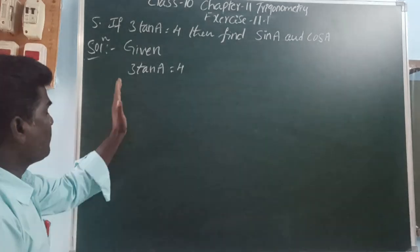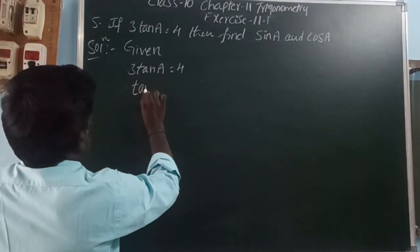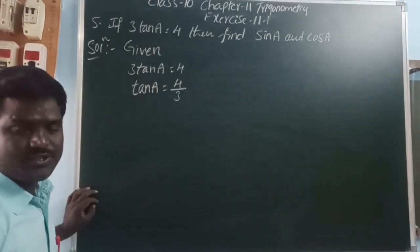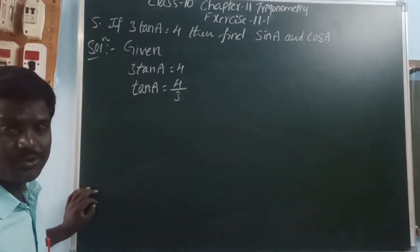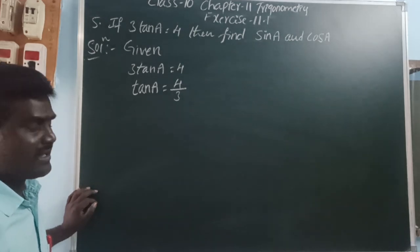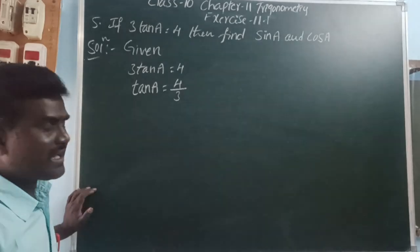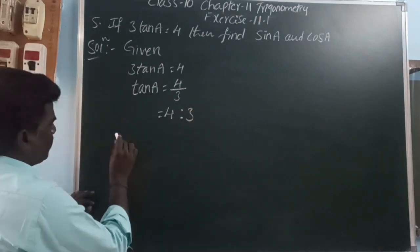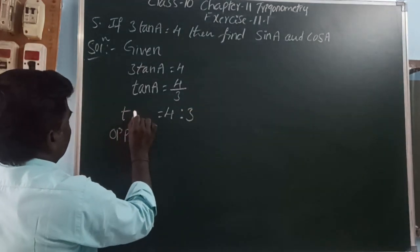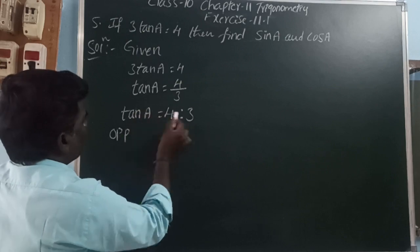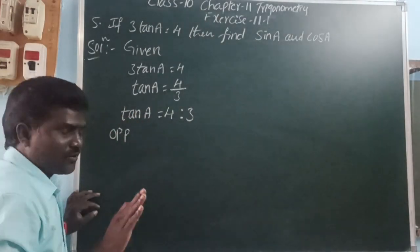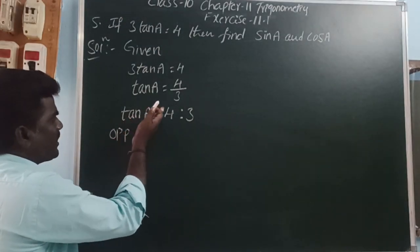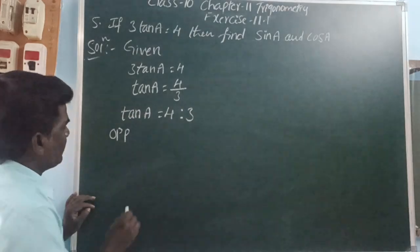So here, given that 3 tan A equals 4, so dividing both sides by 3, tan A is equal to 4 by 3. Tan A means the tan ratio at angle A, which is opposite side at angle A to adjacent side at angle A. So that ratio is 4 is to 3.